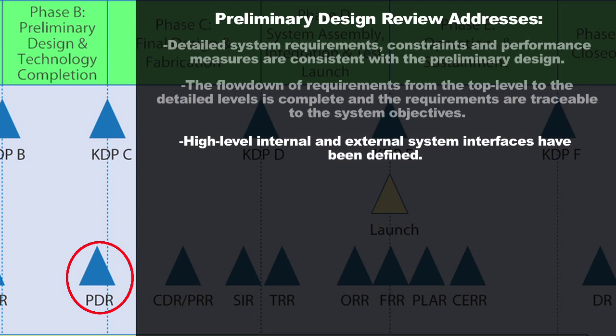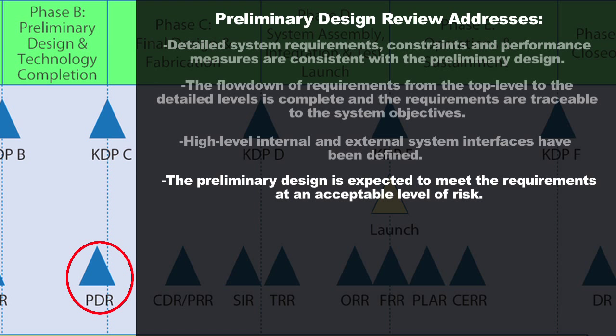You're also going to review your high-level internal and external system interfaces, making sure they've all been clearly defined — and now these interfaces will go to very detailed levels between components of the system. In this review, you also show that your preliminary design is expected to meet all the defined requirements at an acceptable level of risk. The review team will be looking for areas where you've defined a requirement that may be very difficult to meet with available technologies. If such areas exist, you need an assessment of fallback options — perhaps a technology that can almost meet the requirements — and identify what impact that would have on overall system performance and ability to meet objectives.